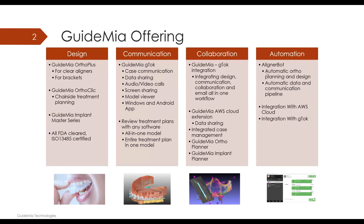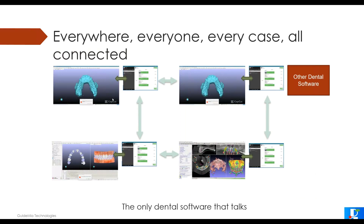We also have a service module called AlignerBot. It's an automatic service, and we're going to give another workshop in a week to introduce what it can do. Basically, we offer a chair-side version, a lab version, and the communication software to connect people together — that's how the ecosystem looks.